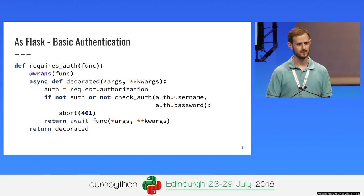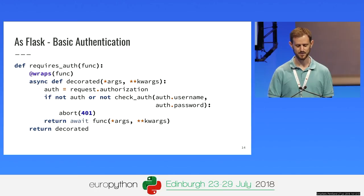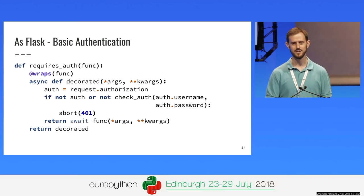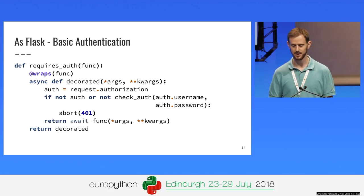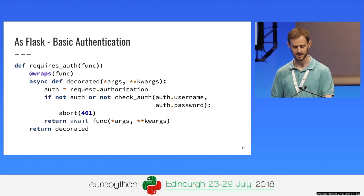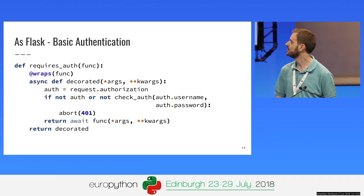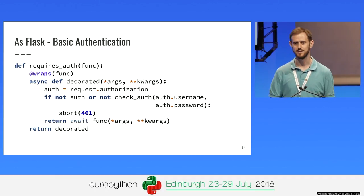Another example to emphasize this point: if I took a little snippet off the Flask snippets site — a basic authentication system — all I had to do to make it work with Quart is just add the async keyword and the await keyword, and I'm done.